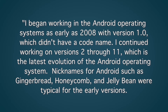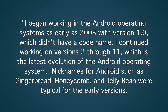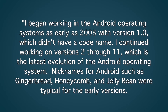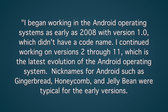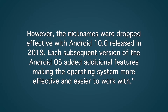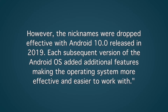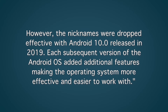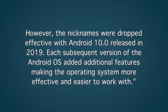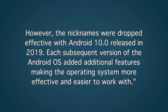I continued working on versions 2 through 11, which is the latest evolution of the Android operating system. Nicknames for Android such as Gingerbread, Honeycomb, and Jellybean were typical for the early versions. However, the nicknames were dropped effective with Android 10.0 released in 2019. Each subsequent version of the Android operating system added additional features, making the operating system more effective and easier to work with.